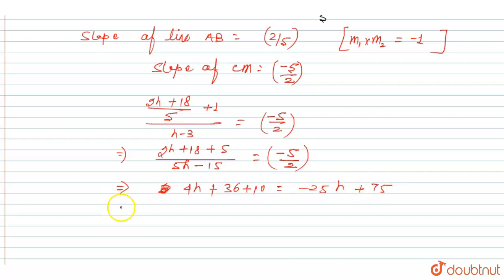When we solve, then we get 29h equals 29. Then h equals 1. The value of h is 1.